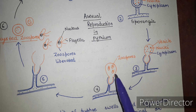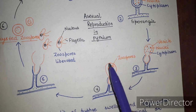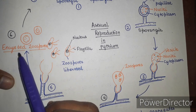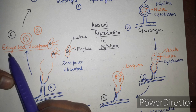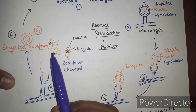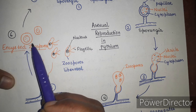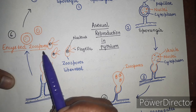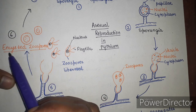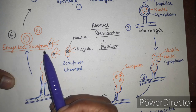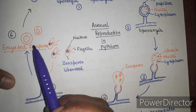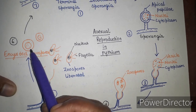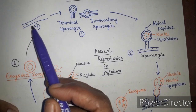After the vesicle bursts, the zoospores are liberated. They then undergo a stage called encystation — they withdraw their flagella and become surrounded by thick walls. These encysted zoospores are capable of surviving unfavorable conditions. On return of favorable conditions such as suitable moisture or temperature, the zoospores germinate by means of a germ tube and give rise to new hyphae.